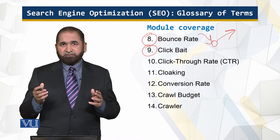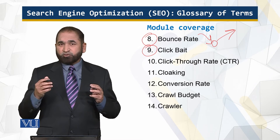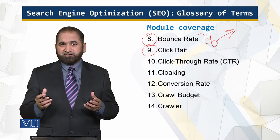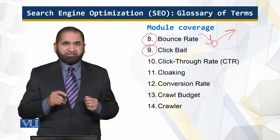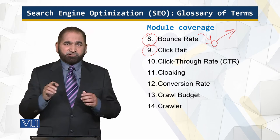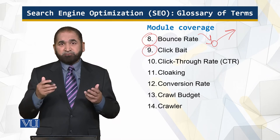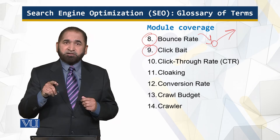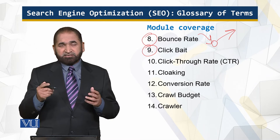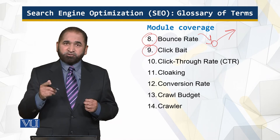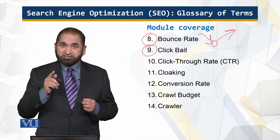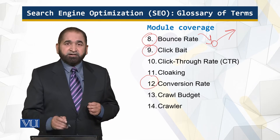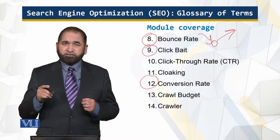Clickbait is when a link promises something interesting, rewarding, or enticing, but it is not actually there. The text, picture, or video seems to offer something, but when you click on it, it leads somewhere else and delivers something other than what was promised.